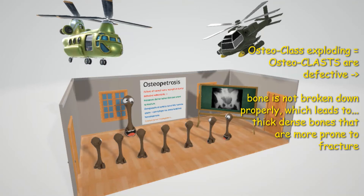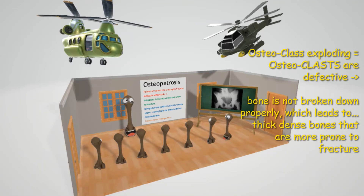Normally osteoclasts break down bone, and since they're defective in osteopetrosis, the bones will not break down normally. Now this might sound good — don't we want to have thick bones? No. Thick, dense bones are not good because they're actually more prone to fracture.